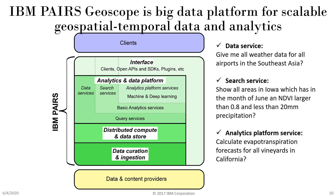Here is the architecture of our system. Data provided by data and content providers is curated, aligned, and brought into a single reference system. This data is then distributed so that it is closer to the compute resources. The third layer is the analytics layer, where various search and data services are provided. We have three types of services: the data service, where a client can request a particular type of curated data; the search service; and the analytic platform service.